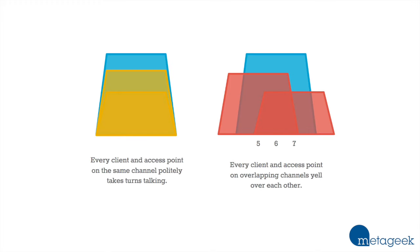The second part of the problem is the way that Wi-Fi interference works. There are two types of interference. Co-channel interference occurs when you've got multiple clients and multiple access points on the same channel. Wi-Fi is pretty good at getting along with other Wi-Fi devices, so they politely take turns talking. But when networks partially overlap — like a network on channel 5, one on channel 6, and one on channel 7 — instead of politely taking turns, those networks are just going to yell and scream over each other, which slows everything down.